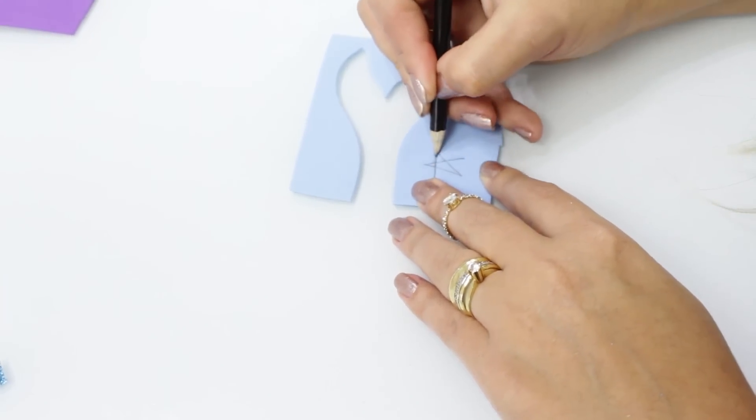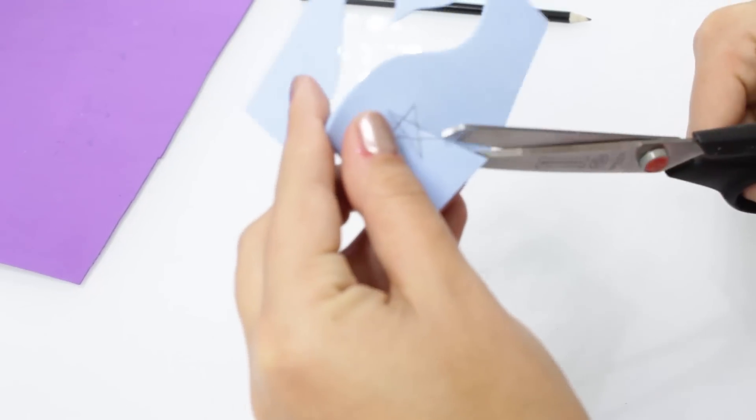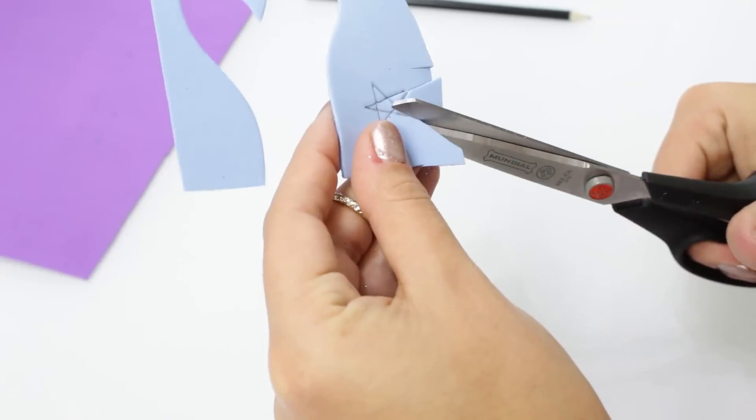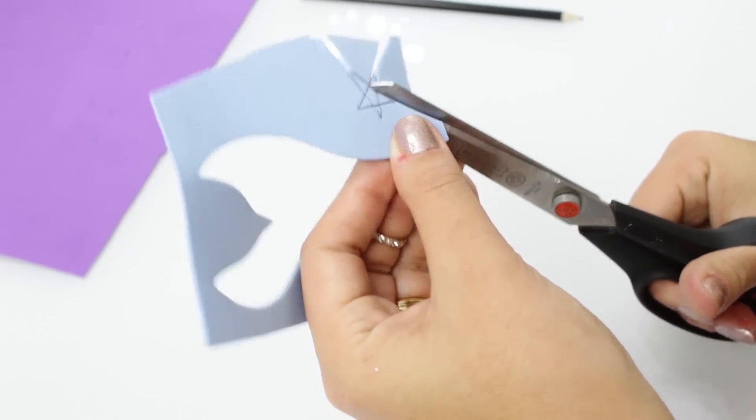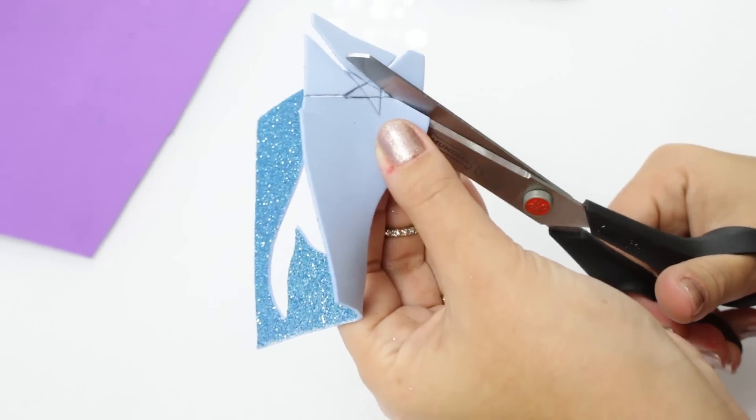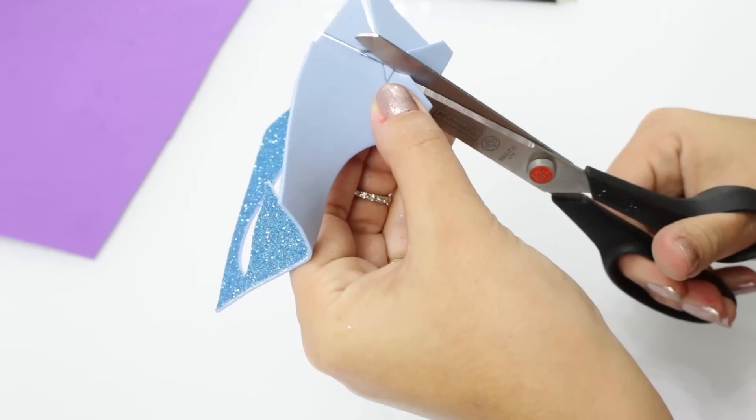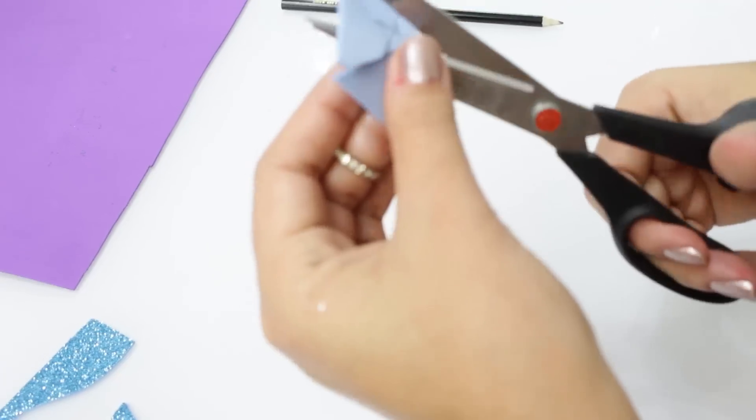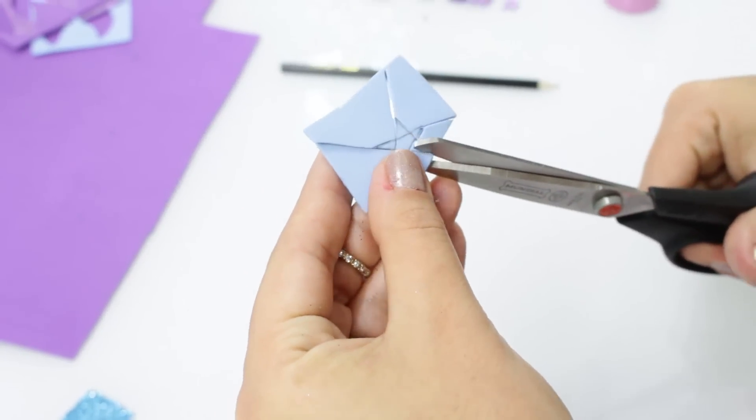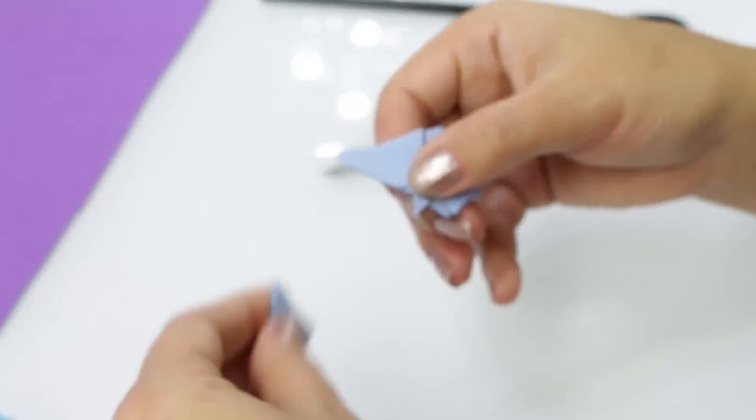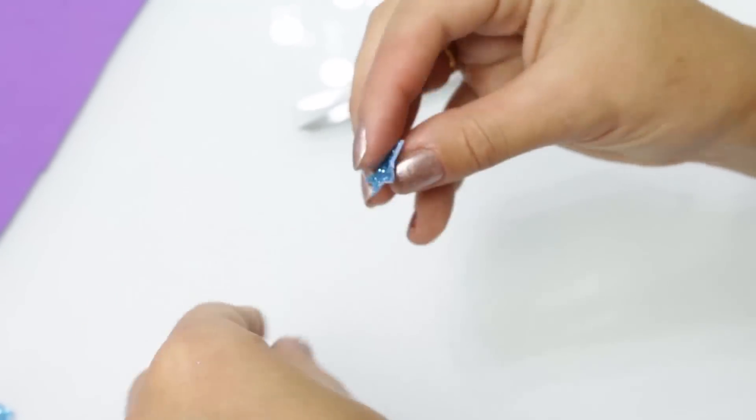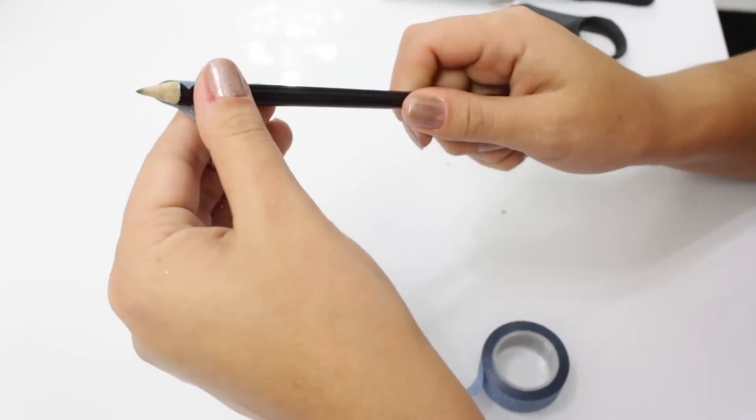Pra cauda lilás, eu vou pegar um pedacinho do meu EVA azul e vou fazer uma estrelinha que eu vou fixar na minha cauda lilás. Sem segredo nenhum, faz o desenho de uma estrela, vai recortando em volta. E a mesma coisa pra cauda azul. Aí eu vou pegar um pedacinho de EVA lilás, vou fazer o desenho de uma estrela e também vou recortar pra fixar na minha cauda azul.